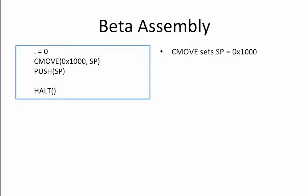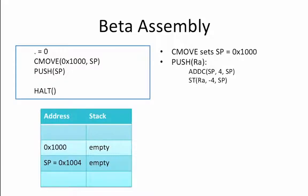In this piece of code, the CMOVE first sets the stack pointer to 0x1000. Then a PUSH(SP) operation is performed. Let's first understand what a push instruction does. A push instruction is actually a macro made up of two beta instructions. To push a value onto the stack, the stack pointer is first incremented by 4 in order to point to the next empty location on the stack. This sets SP equal to 0x1004.